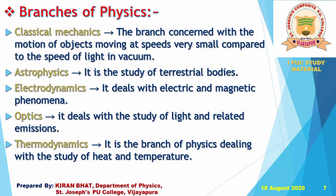First, classical mechanics. It is the branch concerned with the motion of objects moving at speeds very small compared to the speed of light in vacuum. For example, the study about the motion of vehicles, or movement of a person, or movement of planets — these are all under classical mechanics.